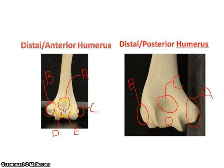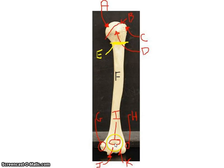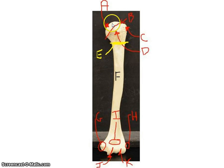On the distal anterior you have the coronoid fossa. On the back you have the olecranon fossa, which is a much deeper indentation. So make sure you have medial and lateral correct, and then anterior and posterior — the coronoid fossa in front is not as deep as the olecranon fossa in the back. Orient the humerus correctly so you don't make mistakes naming these structures.